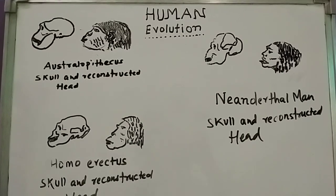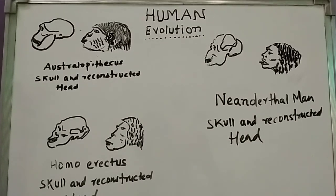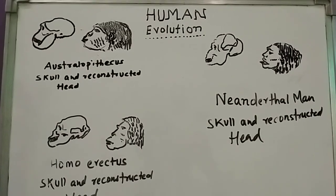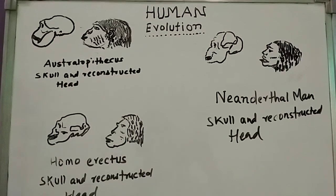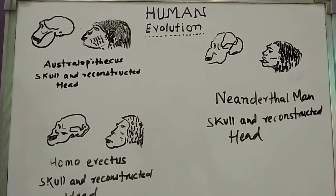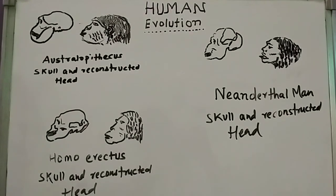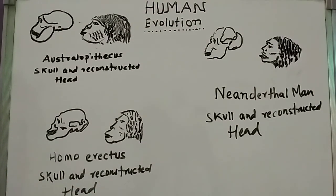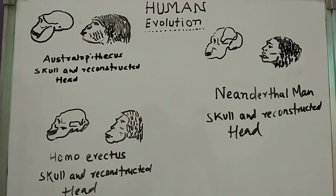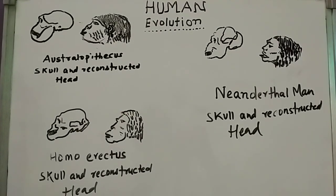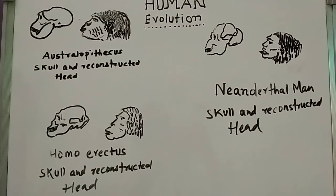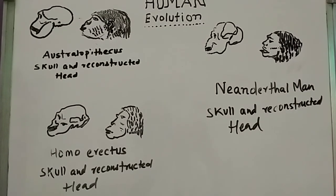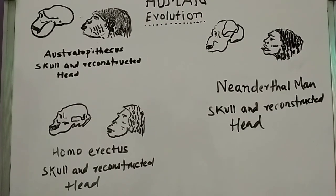These are the characteristic features that for each of the ancestors we have to study for our examination. In the next class we will go to a few more ancestors, and then I will show how they are arranged serially from Australopithecus till modern man. Thank you students for watching this video. If you liked this video, please like, share, comment, and subscribe to my channel BioWorld. Thank you.